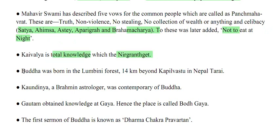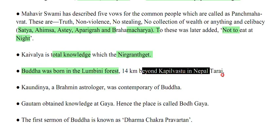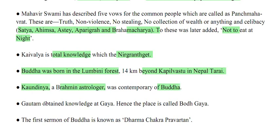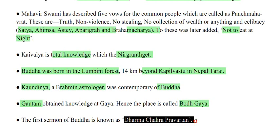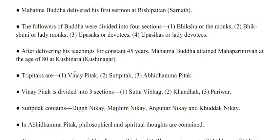Buddha was born in the Lumbini forest, 14 km beyond Kapilavastu in Nepal Tarai. Kondin, a Brahmin astrologer, was contemporary of Buddha. Gautam obtained enlightenment at Gaya — hence the place is called Bodhgaya. The first sermon of Buddha is known as Dharmachakra Pravartana, delivered at Rishipatran Sarnath.